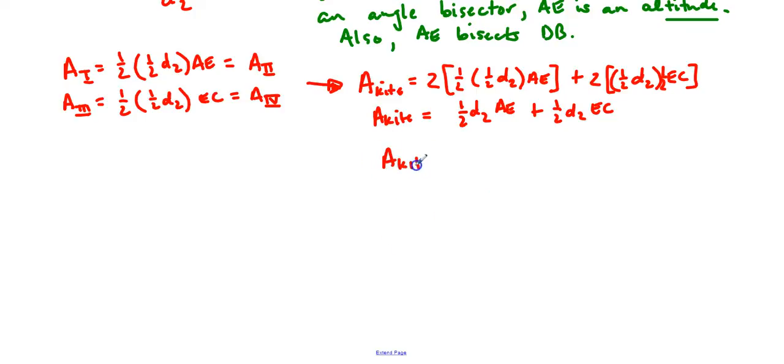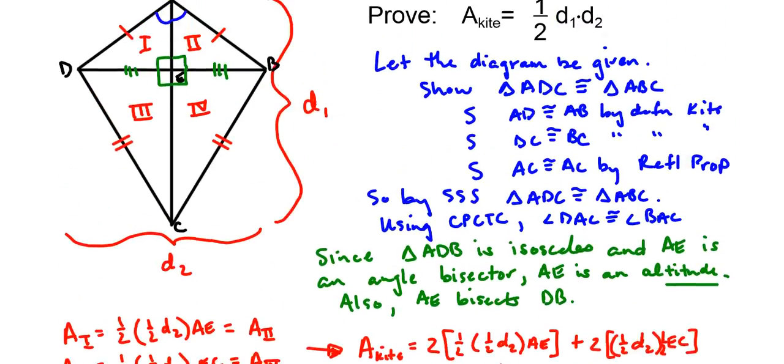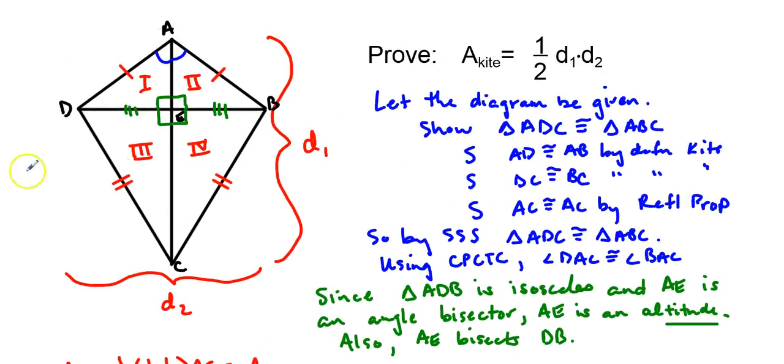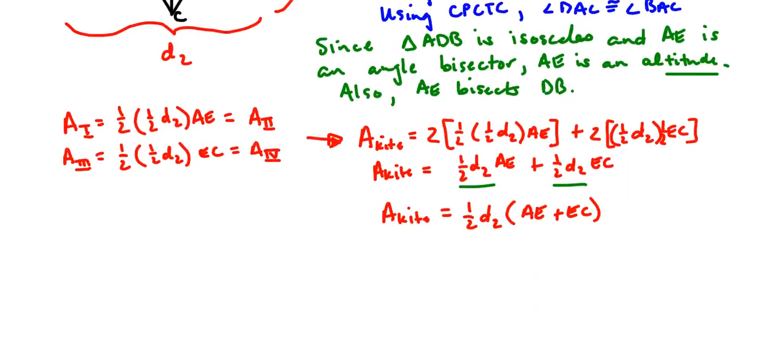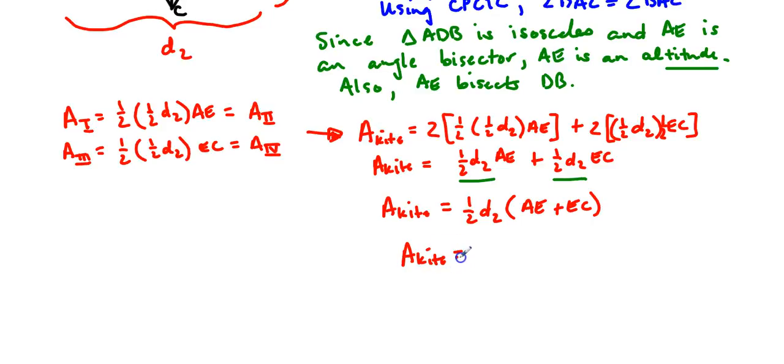And, to finish this off, we've got the area of the kite. We're going to actually factor out a one-half D2. One-half D2. What we're left with on the inside is AE plus EC. And, if we go back up to our diagram, AE is here. EC is this piece. So, add those two up, and you have diagonal one. And, we're done. Therefore, the area of a kite equals one-half D1 times D2.